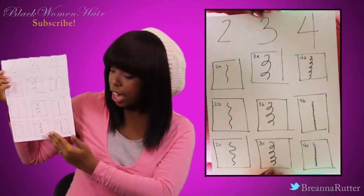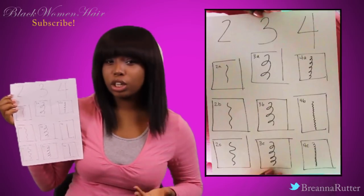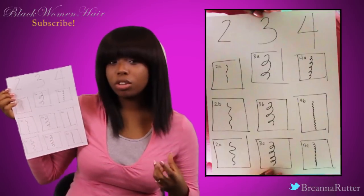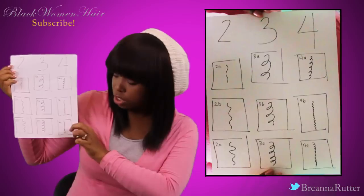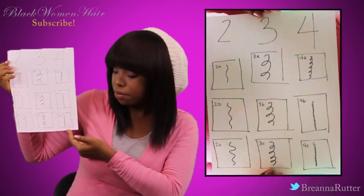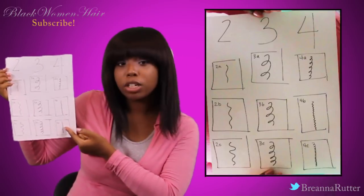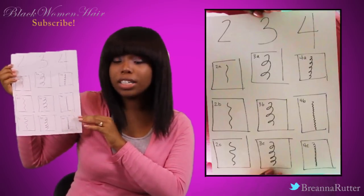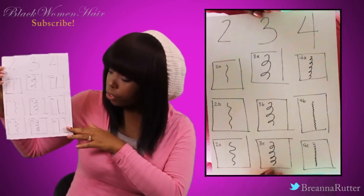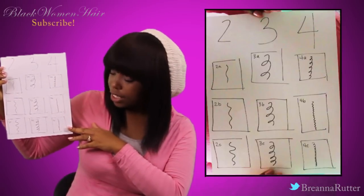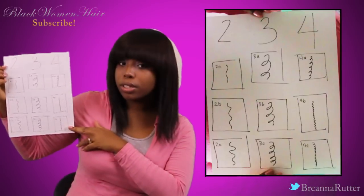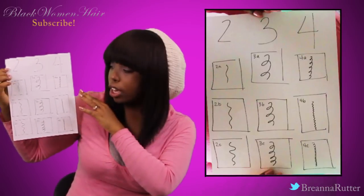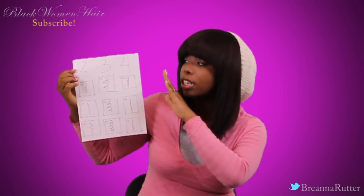Even though 4C and 4B hair may seem like the roughest or hardest to manage, just because it may feel strong doesn't mean it is. These curls naturally have tension spots, and you have very delicate areas even on individual strands, so you have to be very careful when detangling, handling, and washing your hair. Since type 4 hair is the most tightly curled, it definitely requires a lot more moisture, oil, and conditioner than type 3, 2, or 1.